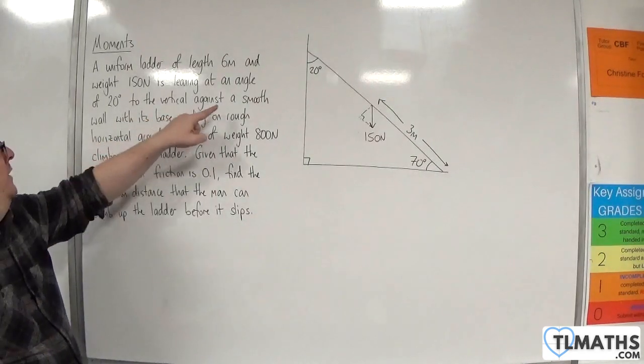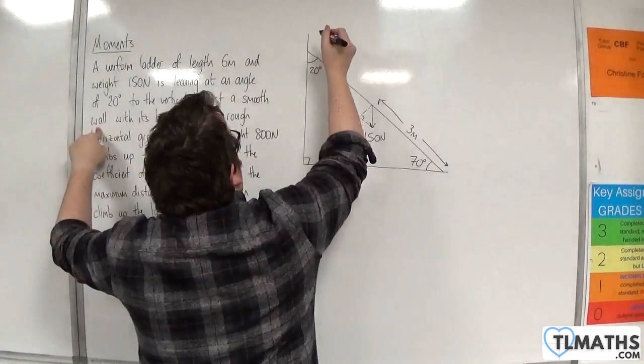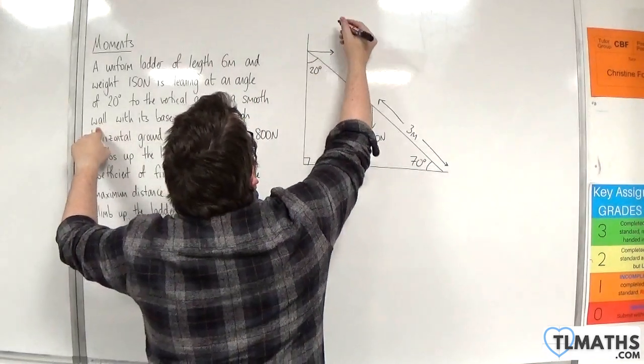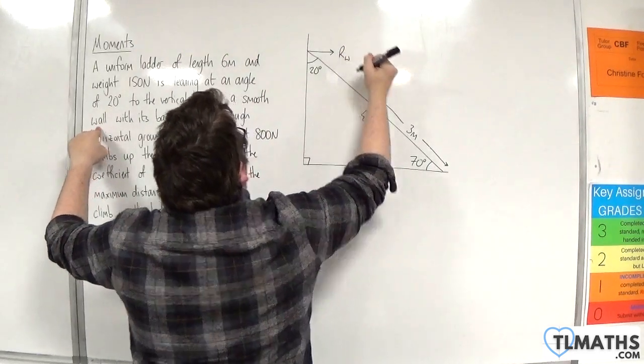Now it's against a smooth wall. So the wall is smooth, so there's no friction, but there will be a normal reaction force. So the normal reaction force Rw for the wall.